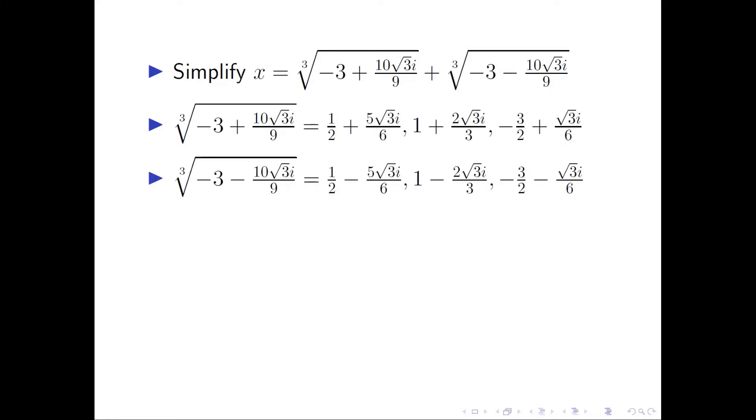The second cubic root is similar to the complex conjugate of the first one. If we add them up accordingly, we end up with three real numbers: 1, 2, and negative 3.